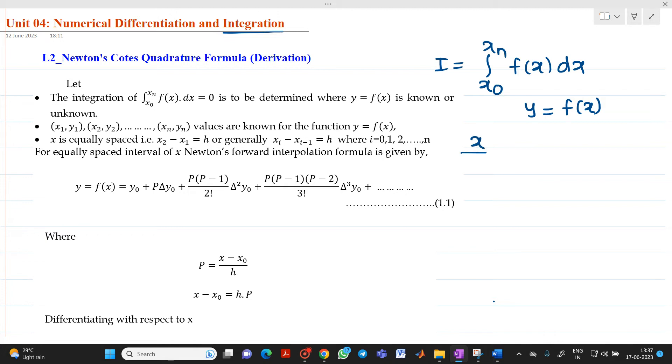We have data points starting from x0, y0, then x1, y1, up to xn and yn. These are the data points which are known for a given function y equal to f of x.